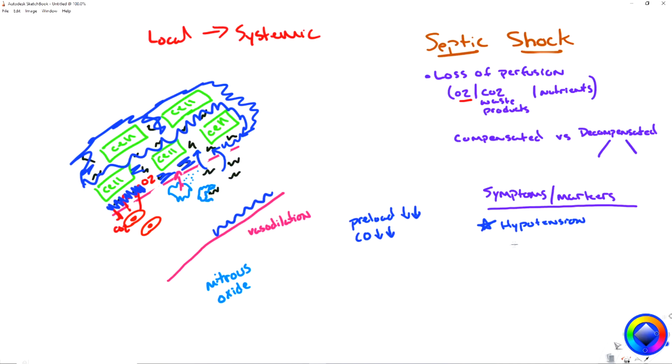The body goes, oh crap. I need to compensate for this. So it raises the heart rate. And this is where we get the tachycardia and our second marker from. Because we have a lower volume to move, the heart needs to pump faster to be able to move it. The problem now is we have a hypovolemic state, right? We're losing fluid. So with that, we're losing perfusion. So here's our first look into why we have lower perfusion.